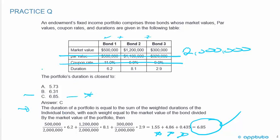Very easy — just doing a weighted average. You need the market value of the bonds and the duration of the bonds, and that's it.